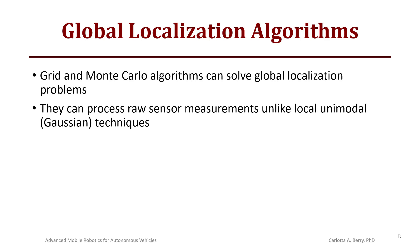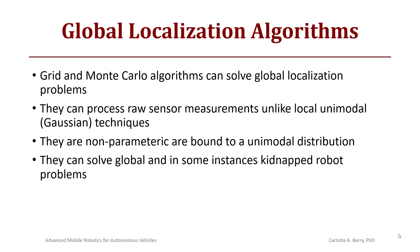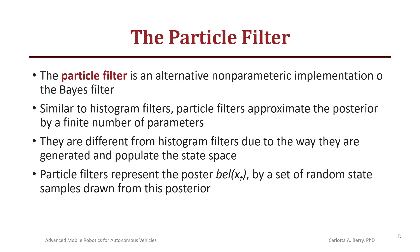Global localization algorithms — grid-based and Monte Carlo — can solve the global localization problem. They can process raw sensor data, unlike local unimodal Gaussian techniques. They are non-parametric, meaning they are not bounded to a unimodal or Gaussian distribution, and they can solve global localization and in some instances the kidnapped robot problem as well. A particle filter is an alternative non-parametric implementation of the Bayes filter, similar to histogram filters in that it approximates the posterior belief by a finite number of parameters.